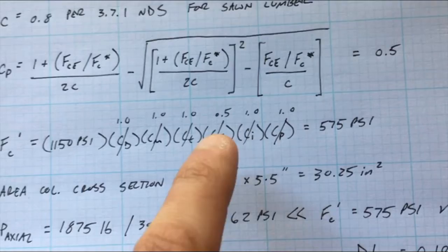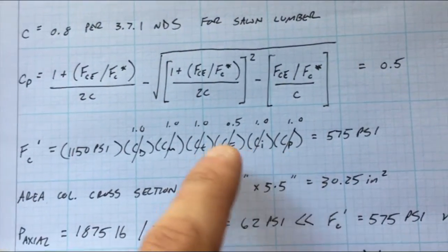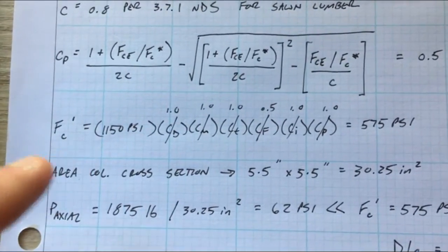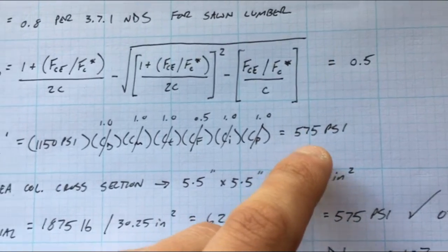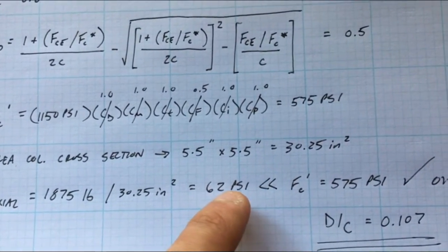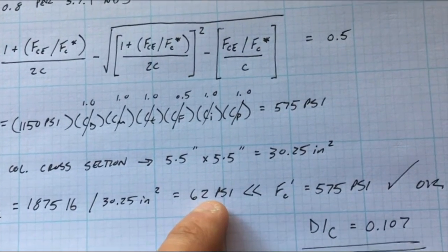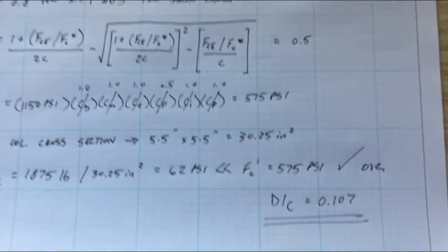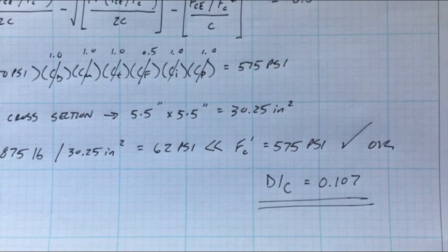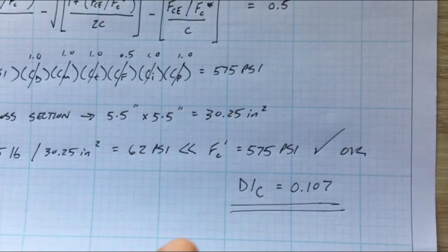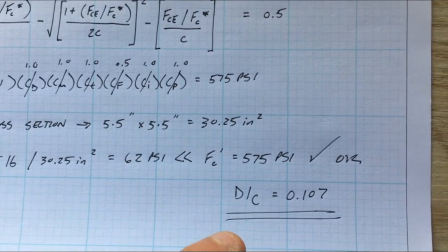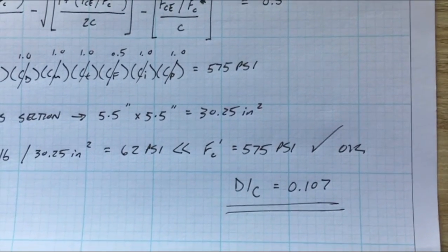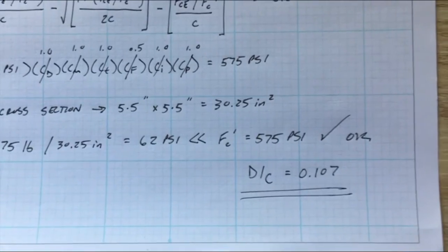That gets us, so Fc prime gets us 575 PSI and you compare that PSI to your demand PSI and it's far greater than the demand, so you know that you're okay. So this six by six column can handle the load that we've defined. And another common practice that you'll see in professional engineering is someone asking for the demand capacity ratio, d over c. So demand is what was loading your member and then capacity is how strong your member is. So d over c is 62 over 575 which gets you 0.107. And that's it, thanks everyone, until next time.